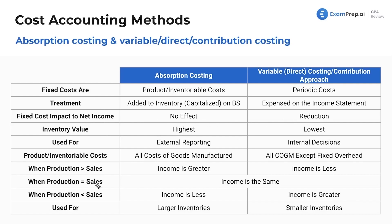These points are all based on multiple choice questions you could have. When production is greater than sales, inventory value is the highest under absorption costing. That makes sense because you're capitalizing costs to inventory, thus adding the value of those costs to inventory. So instead of having inventory of $500, you add $1,000 to it and it becomes $1,500.